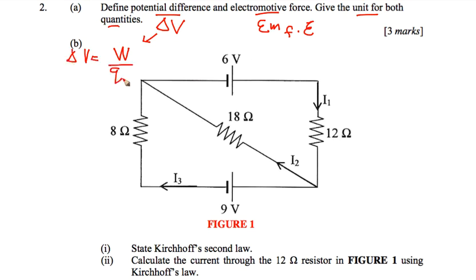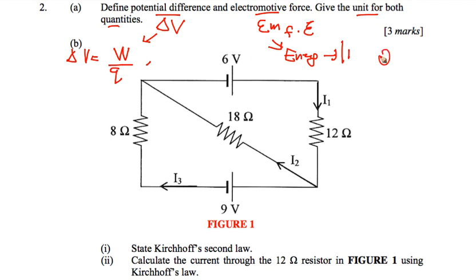Electromagnetic force, or EMF, refers to the energy provided by the source — the battery or battery cell — to each unit charge. Each unit charge has energy provided by the battery or cell. The unit for both delta V and EMF is the same: volts.